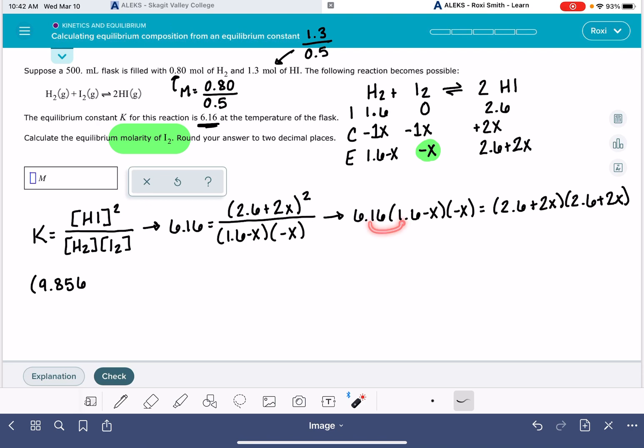6.16 times 1.6 is 9.856. So that's this piece. And then now I'm going to do this piece right here, minus 6.16X. And that's enough for now for the left side. And then over here on the right side, I'm going to do the FOIL method to get this part expanded. So 2.6 times 2.6 is 6.76 plus 2 times 2.6, 5.2X, 5.2X, 4X squared.